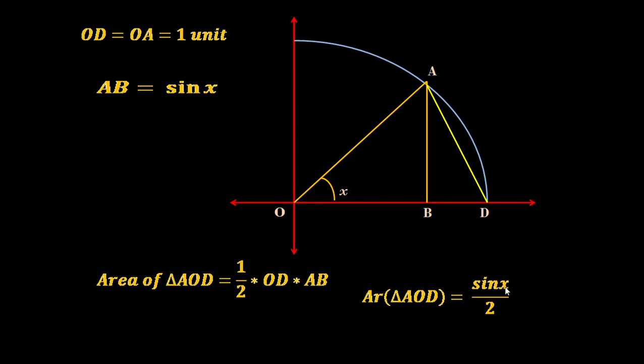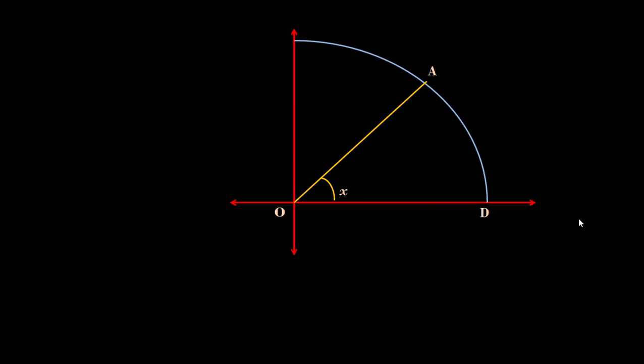OD equals 1, thus we can write area of triangle AOD equals sin(X) by 2, because OD is 1.